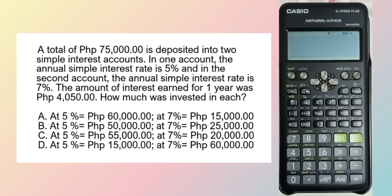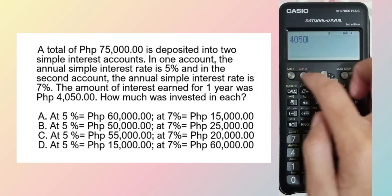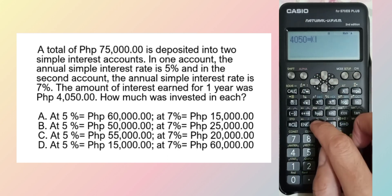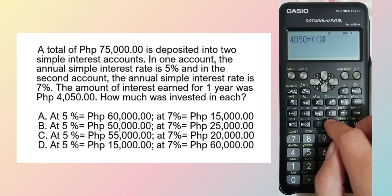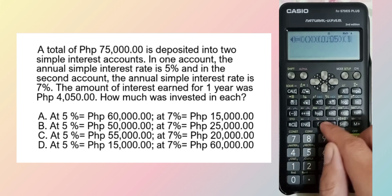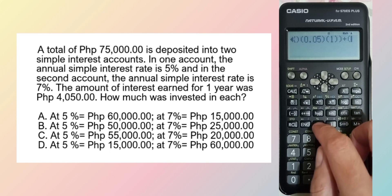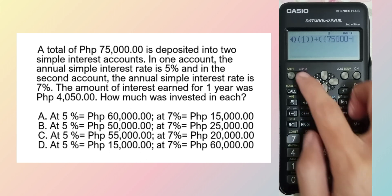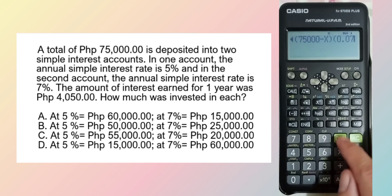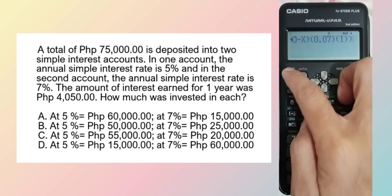How much was invested in each? The interest earned for one year was 4,050. The formula: interest is equal to principal times interest rate times time. Let X be the amount invested at 5% for one year. Then, 75,000 minus X is invested at 7% for one year. Let's solve for X.